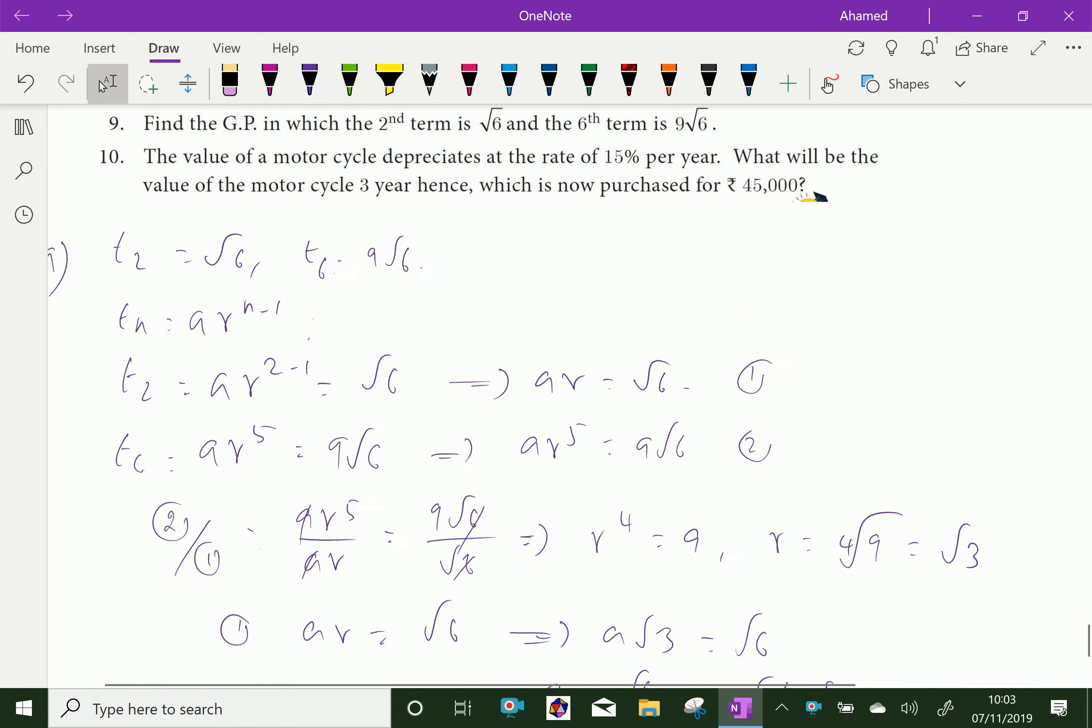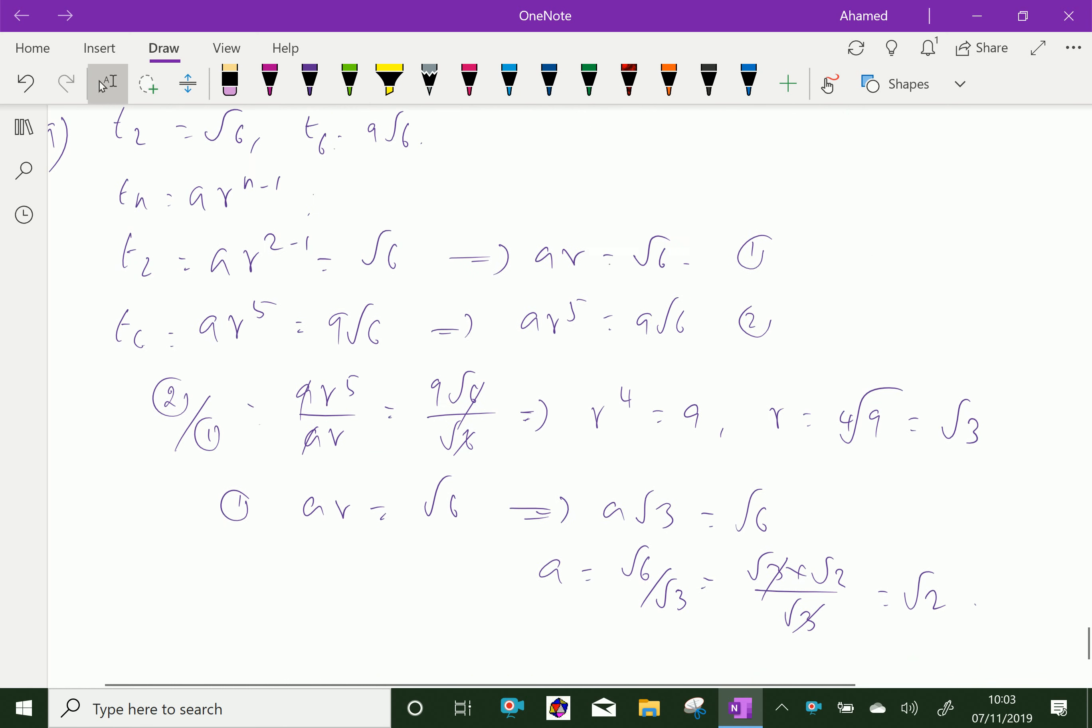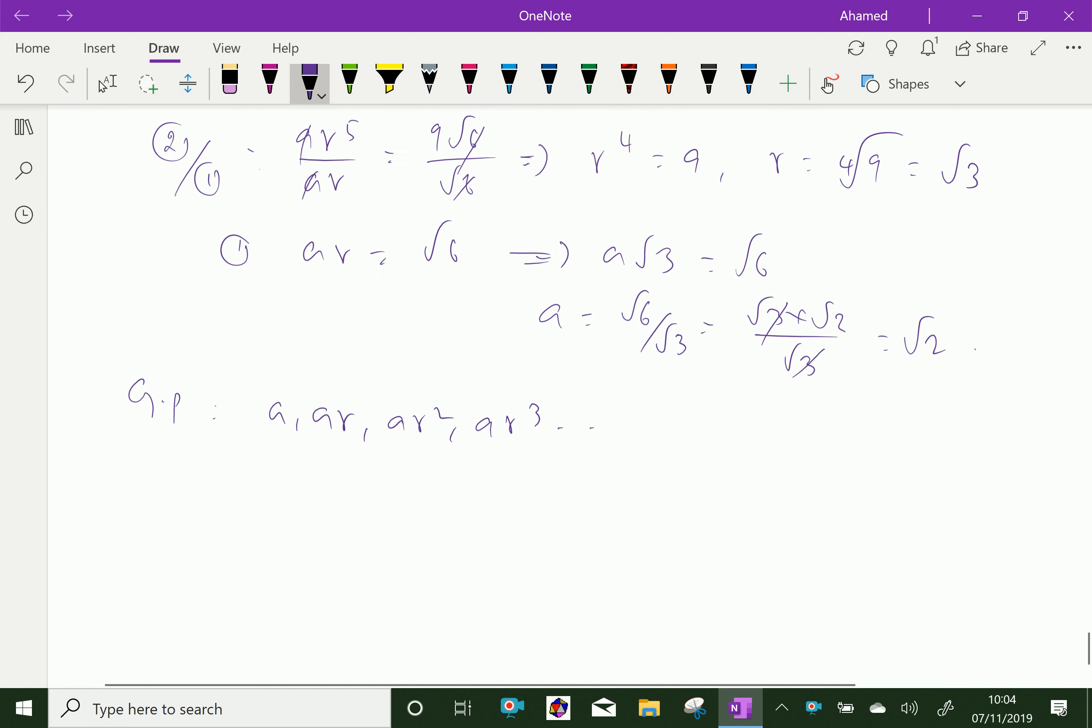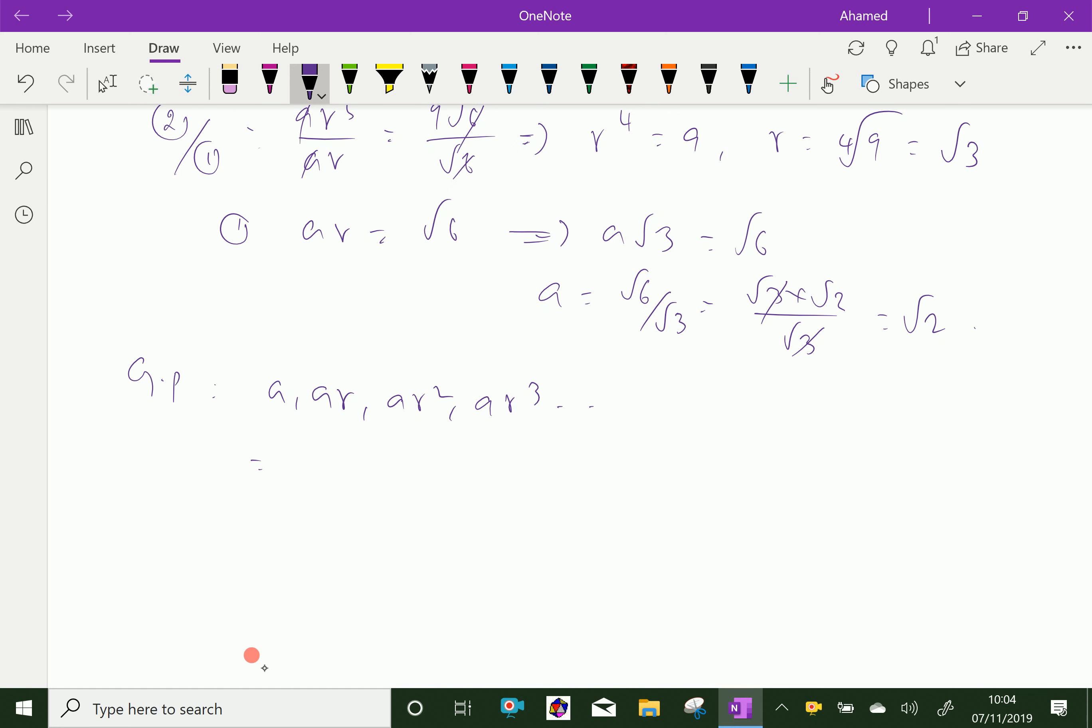Therefore we can find our GP. Our GP is a, ar, ar², ar³ and so on, which equals √2, then ar is √6, then a3 is √2 times (√3)².